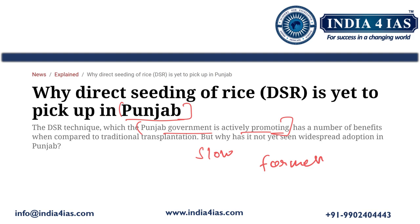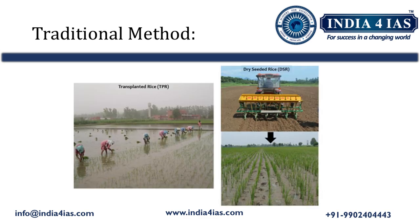Direct seeding of rice can reduce the water usage by 15 to 20% compared to the conventional paddy cultivation. It requires less labor and matures faster compared to traditional methods. Farmers get an incentive of Rs. 1500 per acre if they adopt direct seeding of rice. Despite its many benefits and incentives, it is not widely adopted in Punjab.